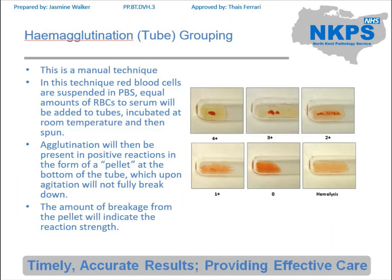With the tube grouping technique it can have a lot of variables changed with it, so it can be very useful. If you want to incubate it in the fridge so that you can get more of the cold antibodies present you can do that. If you want to warm it up it's easy to warm it up. If you need to change the amount of reagents it's a technology that can be easily modified when needed.